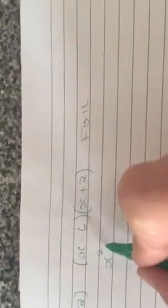The next thing we're going to multiply now is the outer, so I'm going to multiply x by 2. If I multiply x by 2, I'm going to be getting 2x.